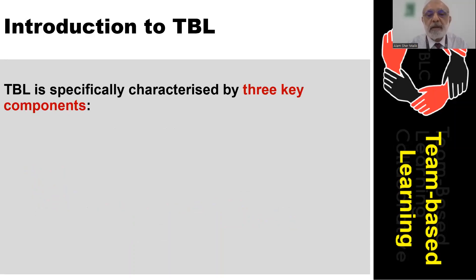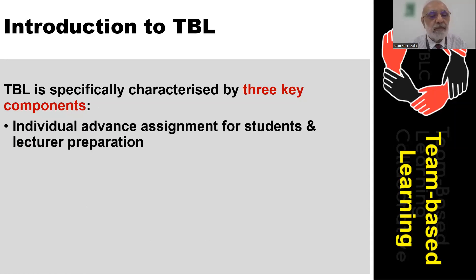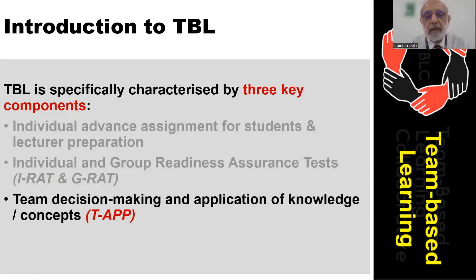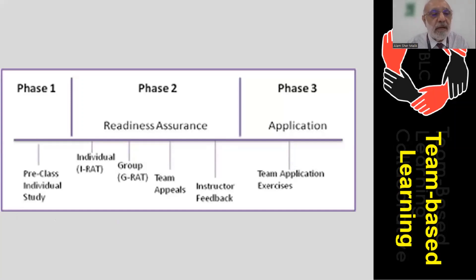TBL is specifically characterized by three components. First, individual advanced assignments for students and lecturer preparation. Second, individual and group readiness assurance tests. And third, team decision making and application of knowledge or concepts. This is also shown in a diagram: phase one is pre-class individual study; phase two includes the individual readiness assurance test, group readiness assurance test, team appeals, and instructor feedback; and phase three is where students complete the team application exercises.